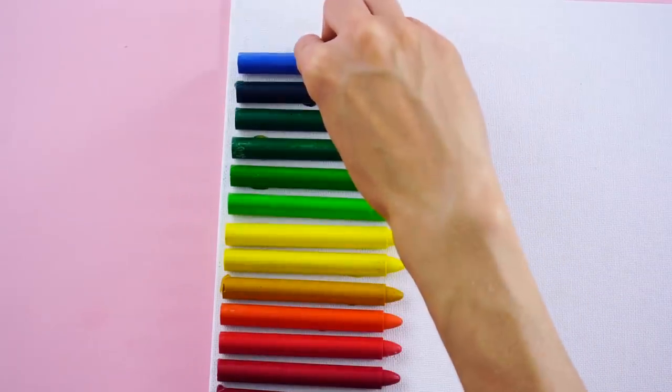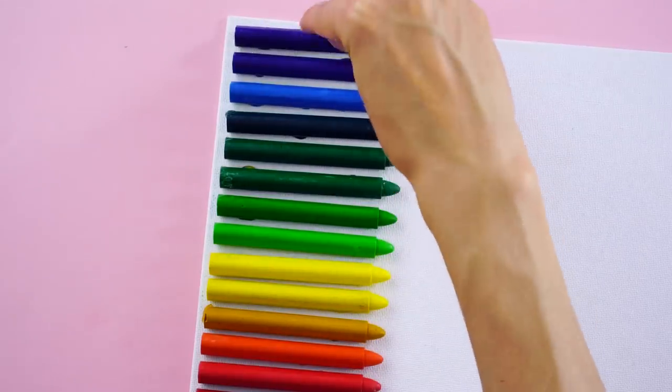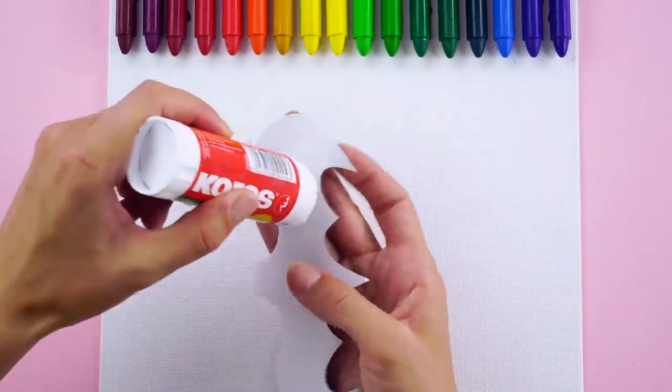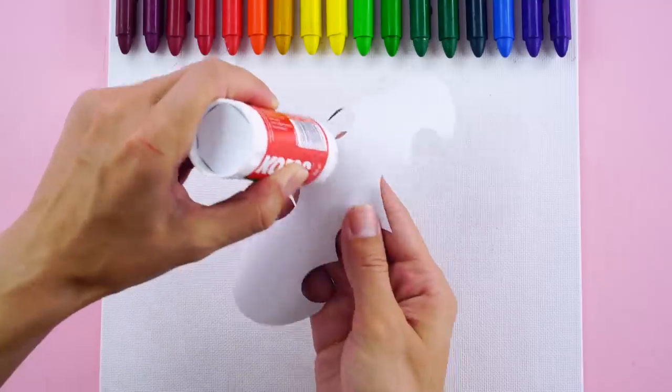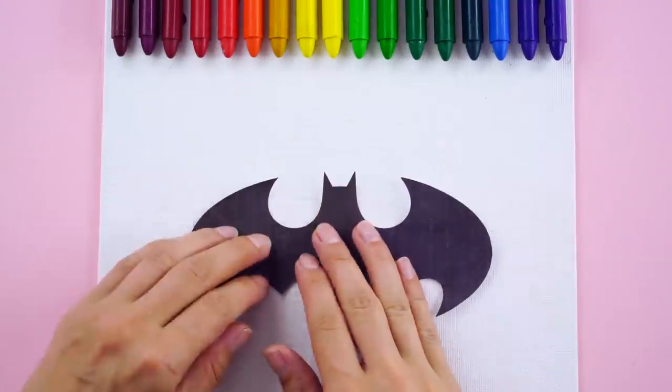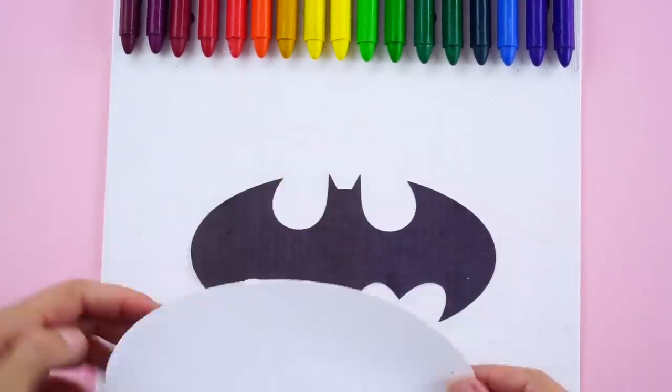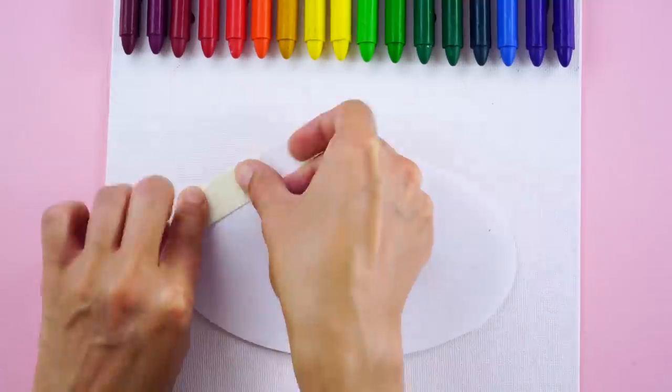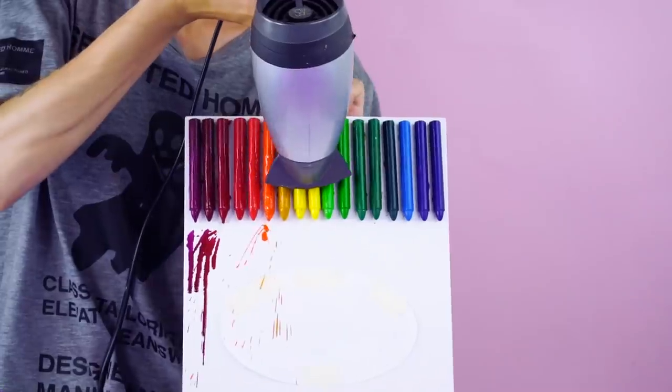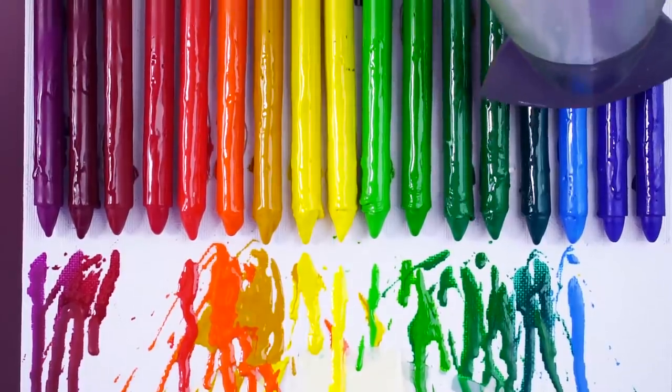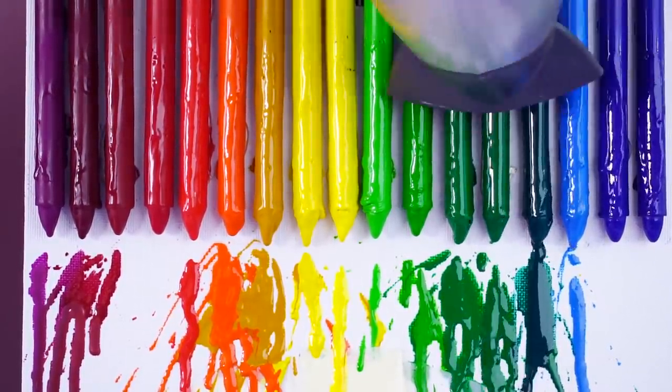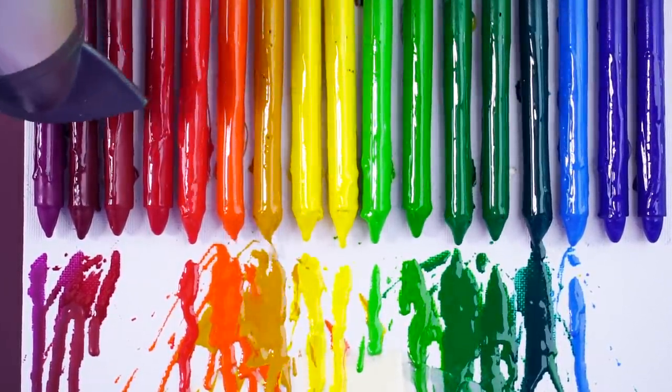Add a design that you want to feature on the canvas. We chose the Batman symbol, but you can print anything you like. Glue it onto the canvas. Then, tape a piece of paper over the design to keep the crayon from dripping onto it. Hold the canvas up and use a hair dryer to melt the crayon so that the colors drip down onto the canvas like this.